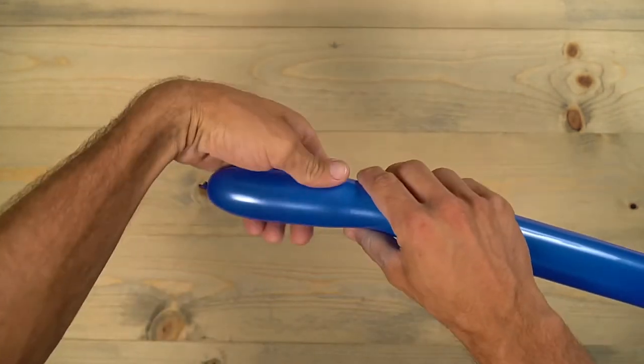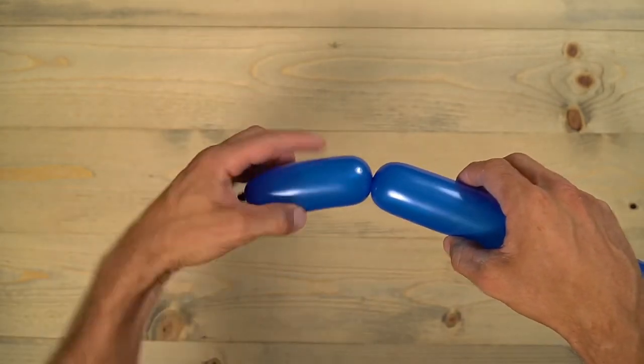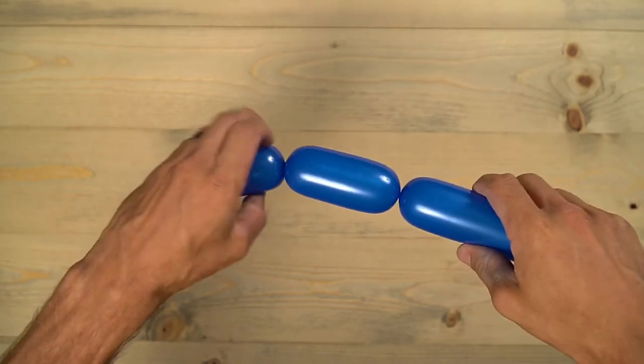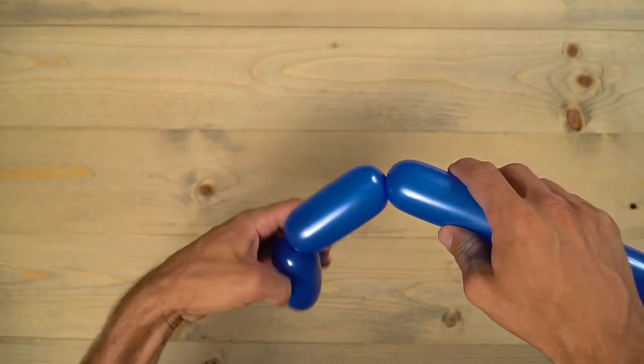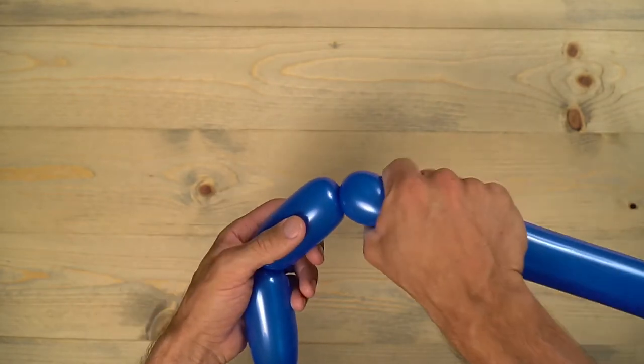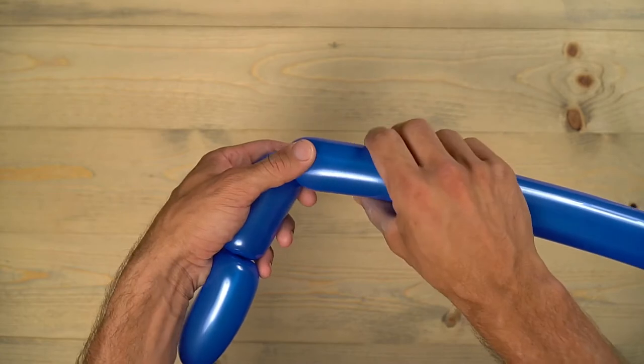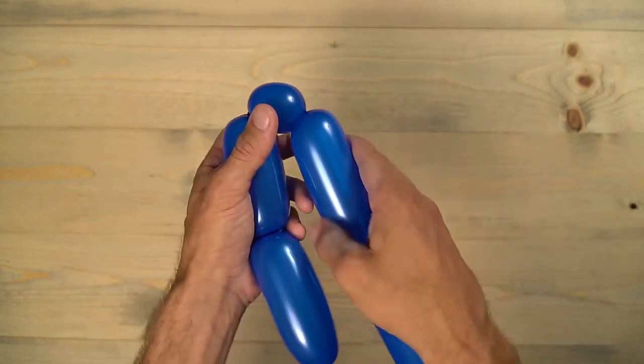I'm going to start right there, twist that in place. I'm going to do the next section a little bit smaller than I just made. This is going to look like a sword here for the main section of the shield. Now I'm going to do a small bubble right here, twist that in place, and I'm going to pinch twist that in a little bit.